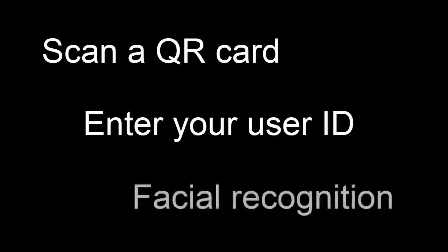Before you can create a punch with a Cloud Clock, you need to log into it. There are three methods for logging in: using a QR card, entering your user ID, or by facial recognition. Your administrator has chosen which of these methods you can use, and you may even be allowed to use more than one of the methods.